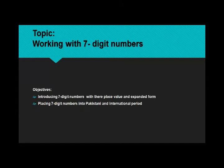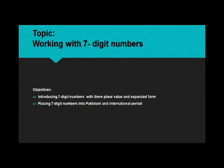Yesterday and the day before yesterday, we started the topic of working with six-digit numbers. You know that the largest five-digit number is 99,999. When you add 1 to 99,999, it becomes 1 lakh — the new six-digit number. We learned how to place six-digit numbers in Pakistani and international place value charts, how to expand them, and how to write them in words.